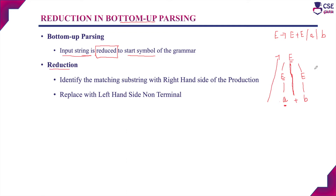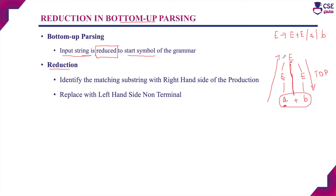The bottom-up parsing technique is just opposite to the top-down parsing technique. In top-down parsing, the construction of the parse tree starts with the root node and proceeds downward until it constructs the leaf node. But in bottom-up parsing, it starts with the leaf node and proceeds toward the top until it derives the start symbol of the grammar. The most important concept used in bottom-up parsing is reduction.